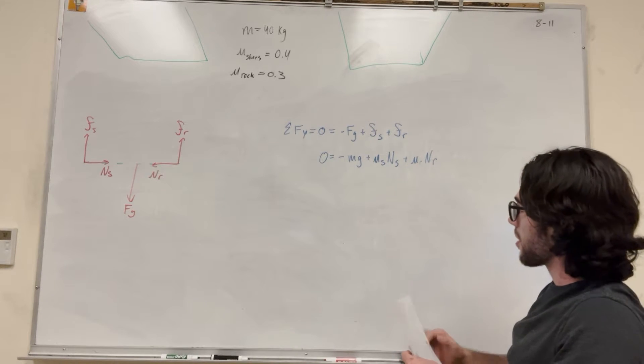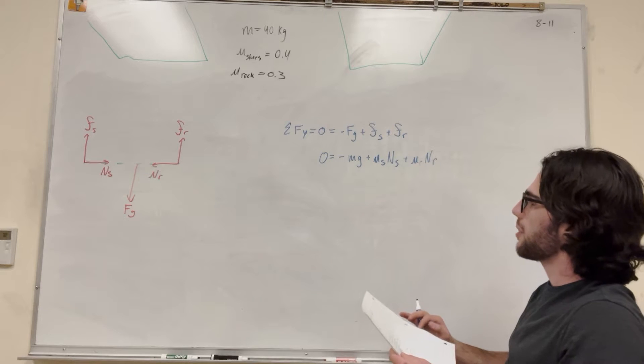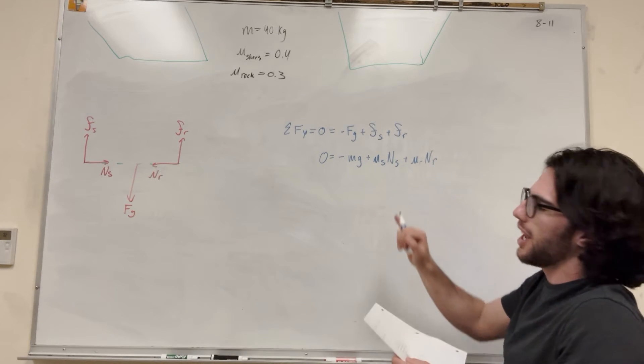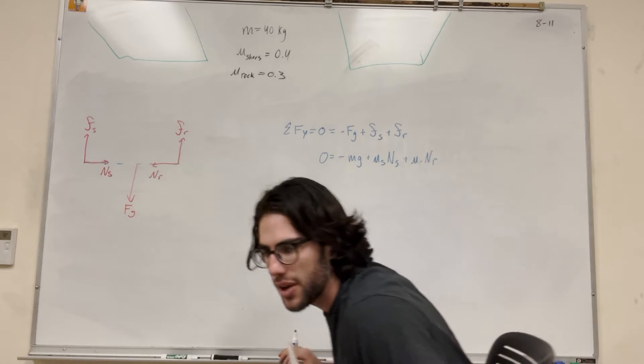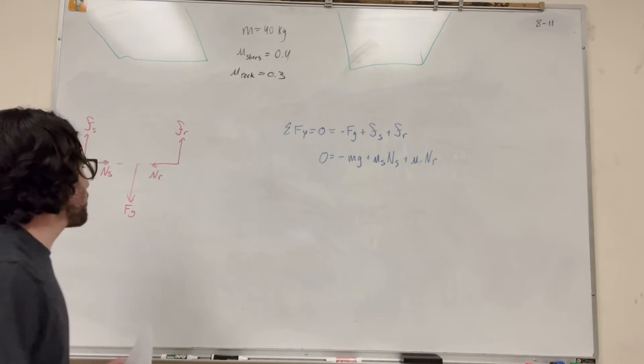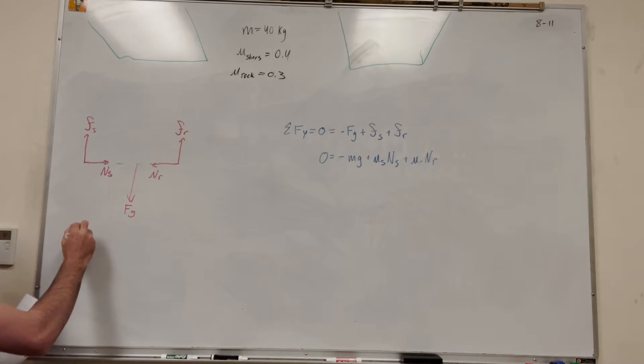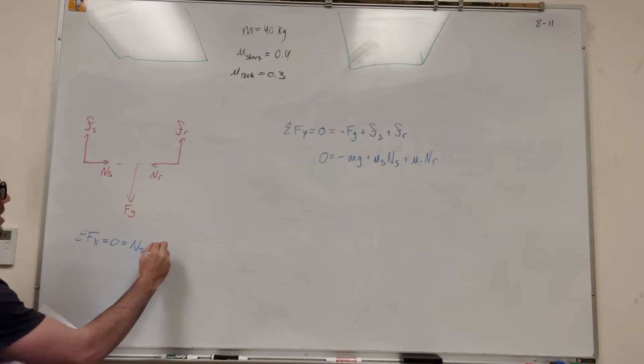So now we're going to get this equation. How are we going to simplify this more, right? We have these two unknowns, and we want one of them. So let's go ahead and find out. So what we can do here is we can take sum of the forces in the x direction now, and we're going to find that the normal of the shoes minus the normal of the rock is equal to zero. So you can basically end up with the equation, the normal of the rock is equal to the normal of the shoes.